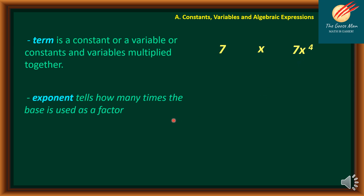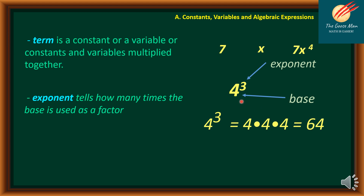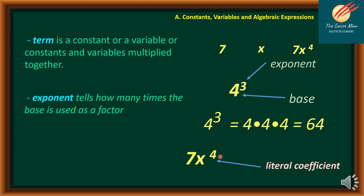An exponent tells us how many times the base is used as a factor. For example, we have 4 to the third power — 3 is our exponent while 4 is the base. We can express 4 to the third power as 4 times 4 times 4, which equals 64. In the expression 7X to the fourth power, X to the fourth power is what we call the literal coefficient, while 7 is the numerical coefficient.